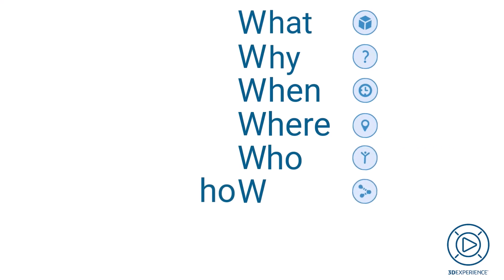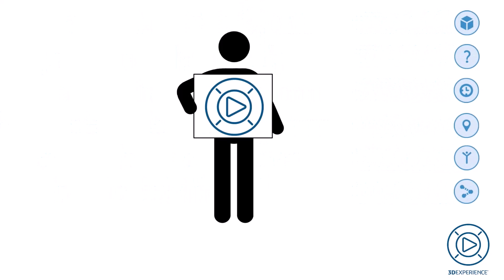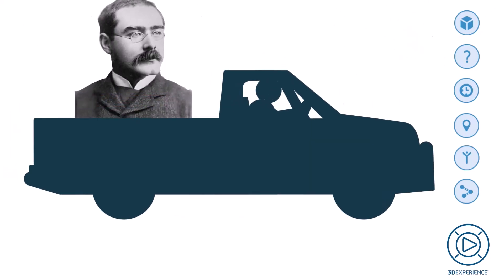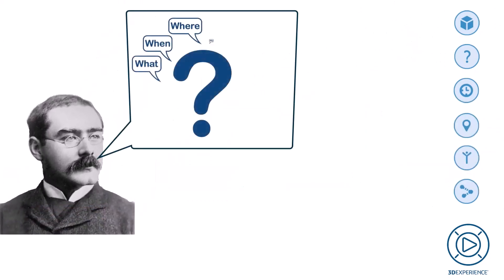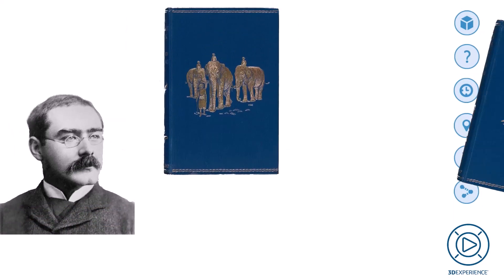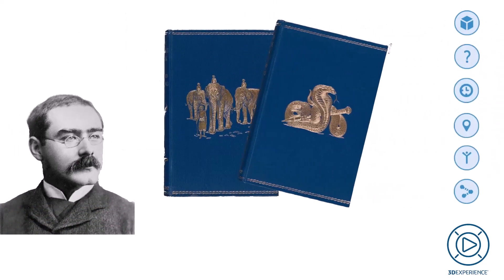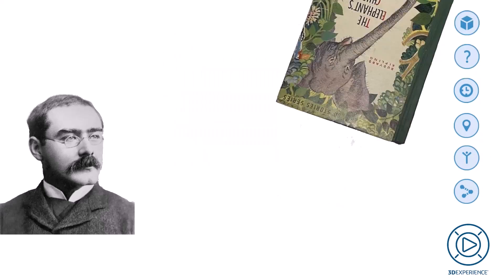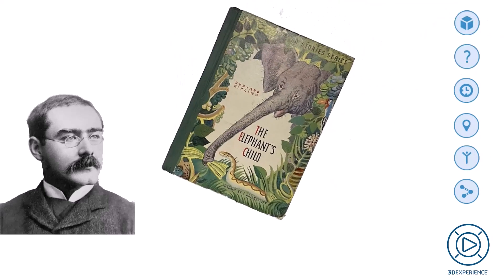As with most 3D Experience Made Simple videos, a bit of history is in order. The six essential questions is part of Sigma Lean; however, these essential questions were first asked by Rudyard Kipling, a journalist and writer. His most known works are the Jungle Books. In 1902, he published a series of short stories called The Elephant's Child.